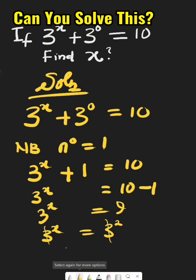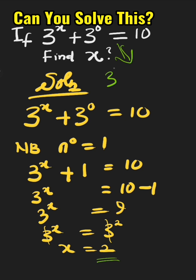Now if you want to check your answer is correct, plug x equals 2 into the original equation. This original equation will be 3 raised to the power of 2 plus 3 raised to the power of 0 equals 10. Is it true? Let's see. 3 raised to the power of 2 means 3 times 3.